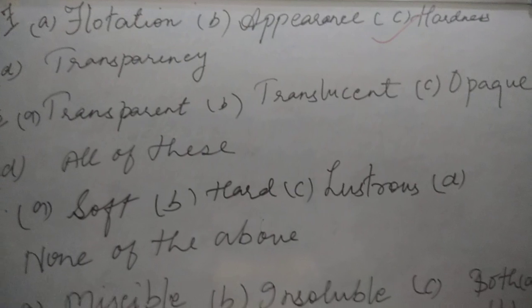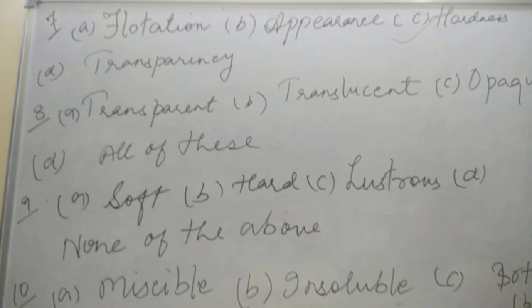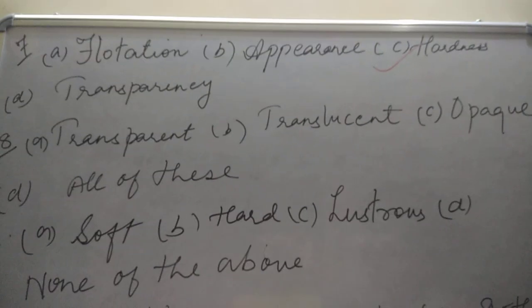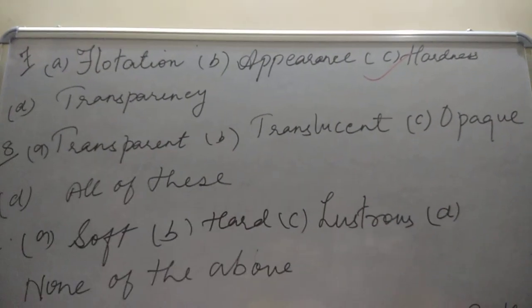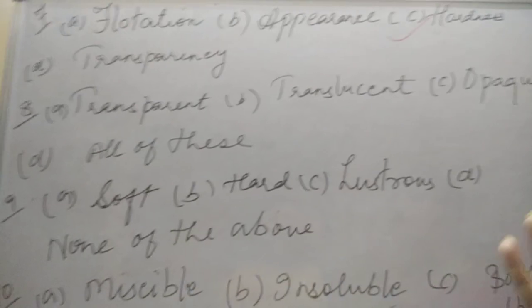The eighth one is, materials through which you can see partially on other side. I told you children, clearly transparent, partially translucent, and not at all, that is opaque.